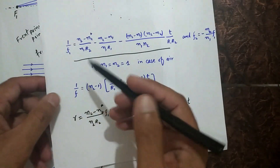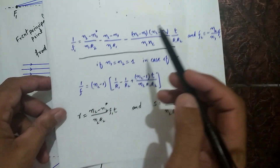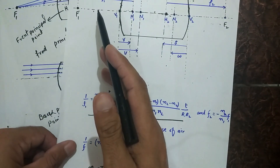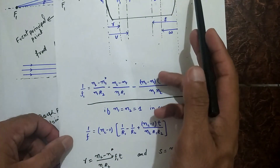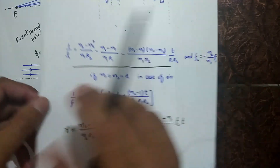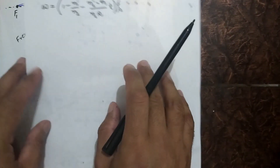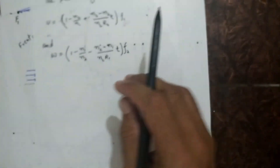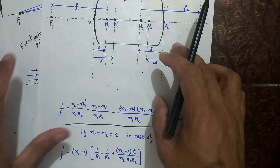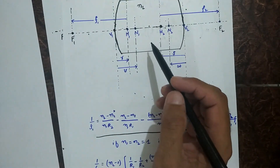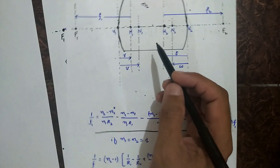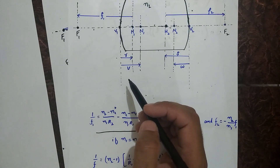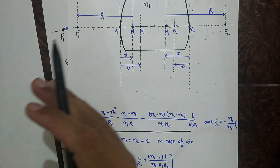There is no need to derive these equations — we only need to memorize them. For the effective focal length, when the front and back media are the same, the front focal length and back focal length will be equal. It must also be noted that while measuring distances, the sign convention must be taken into account: distances directed to the left are negative, and distances directed to the right are positive. Thank you.